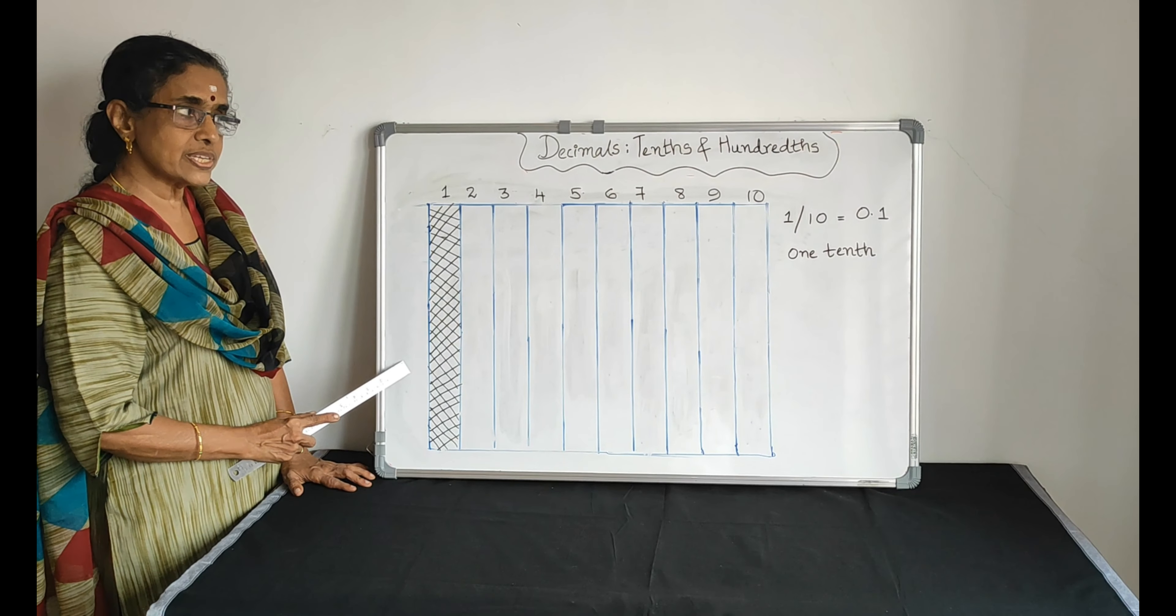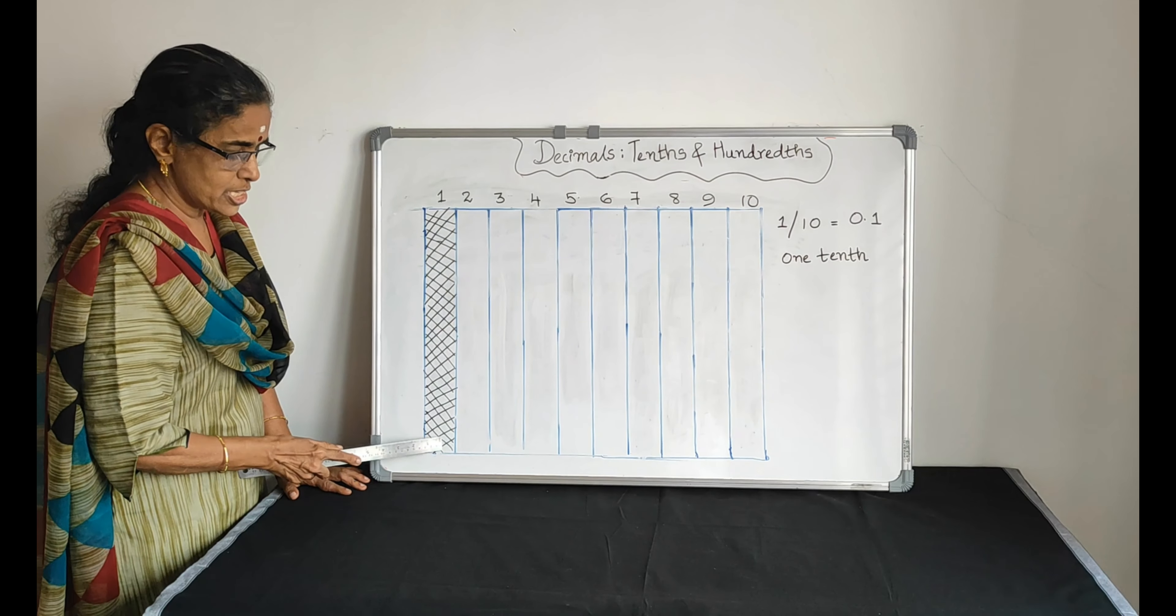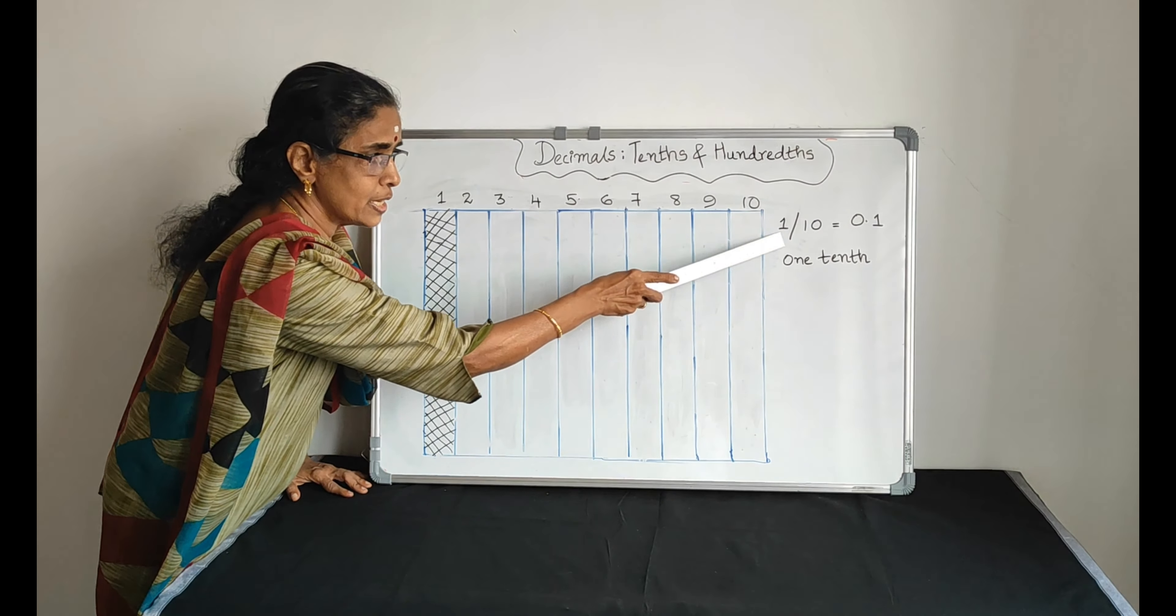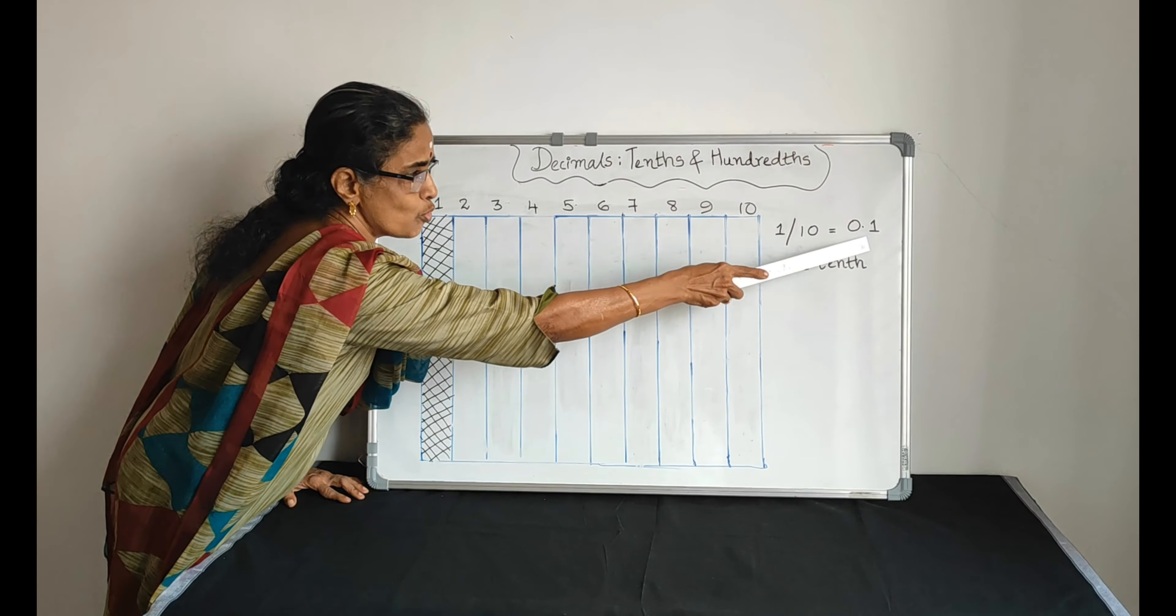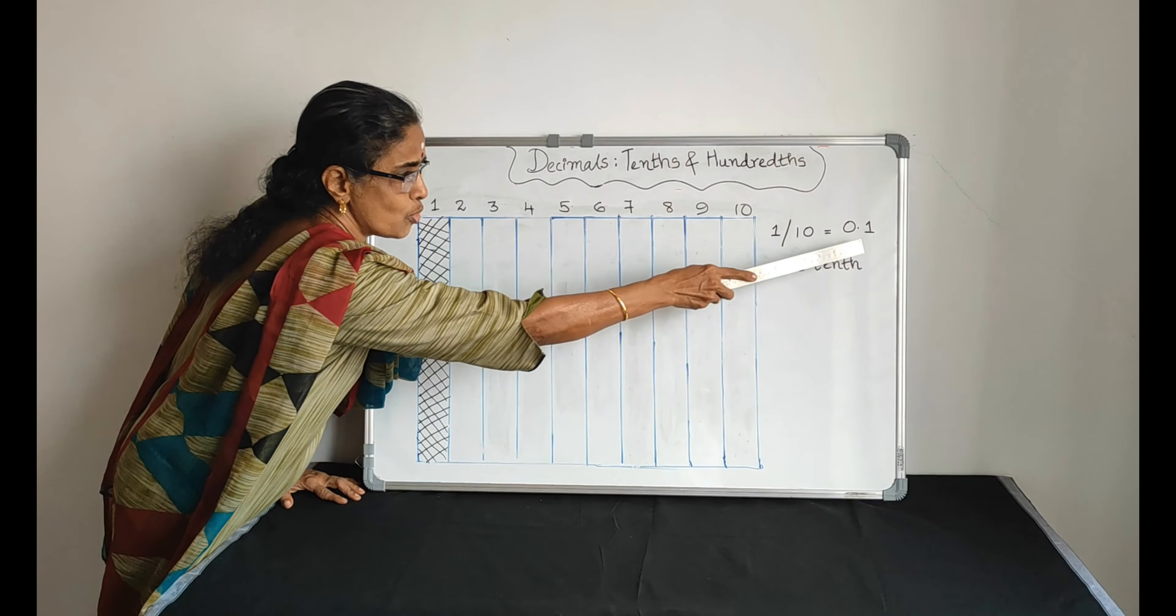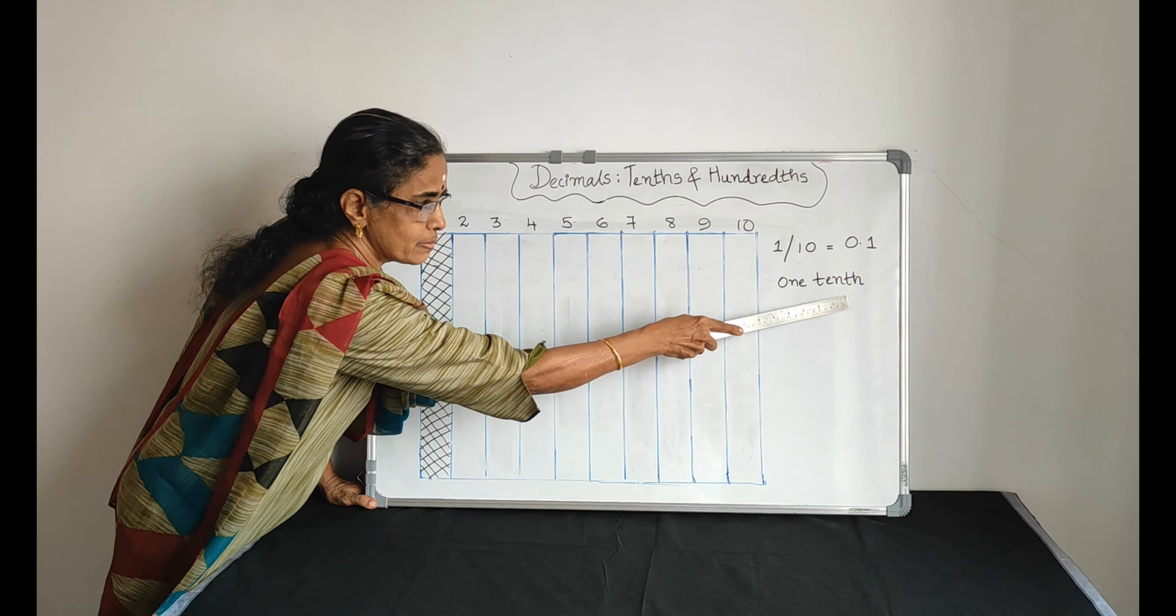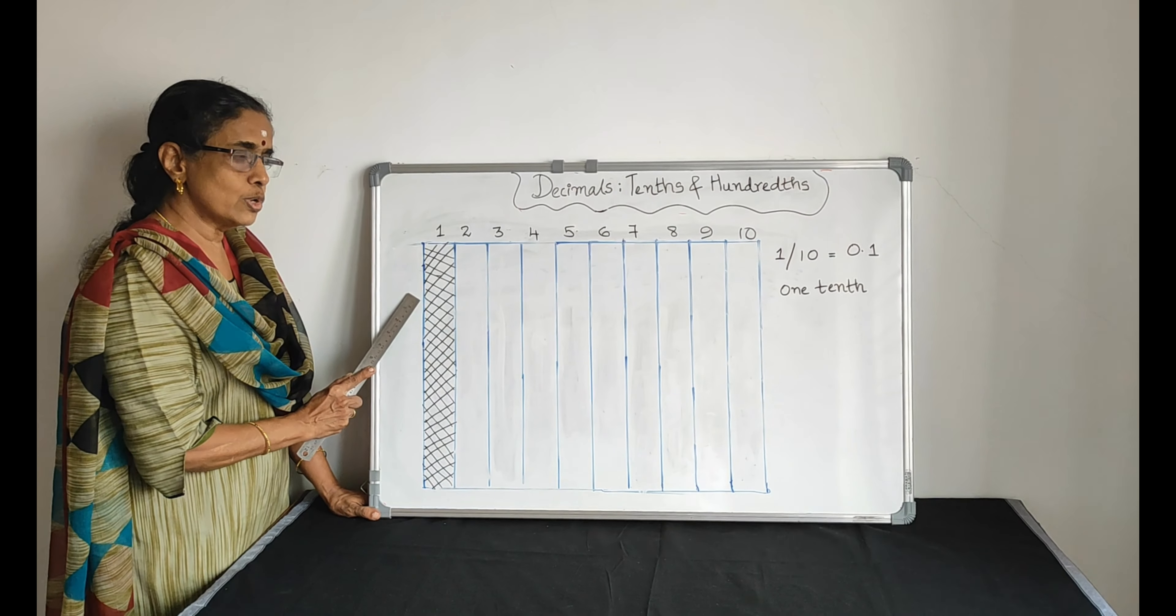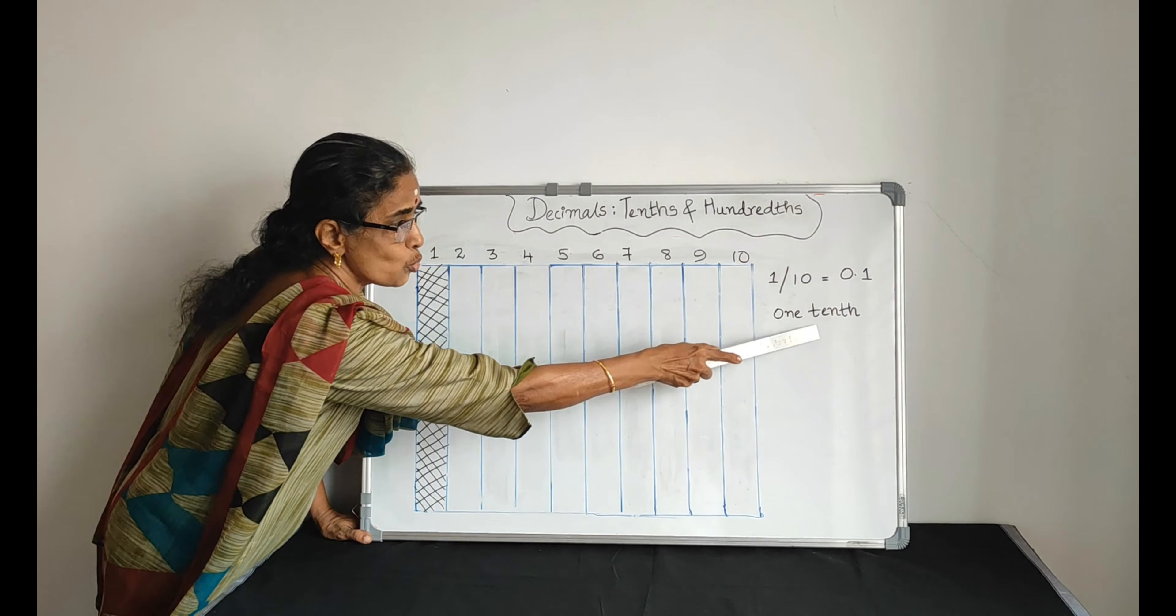Give the answer in fraction. Only one portion is shaded, so it represents one by ten. One by ten means zero point one. It represents, in words, one tenth. Here it is 1/10, which is equal to 0.1. We read it as one tenth.